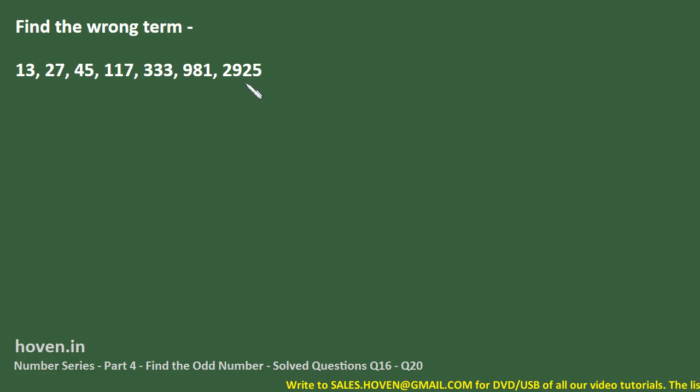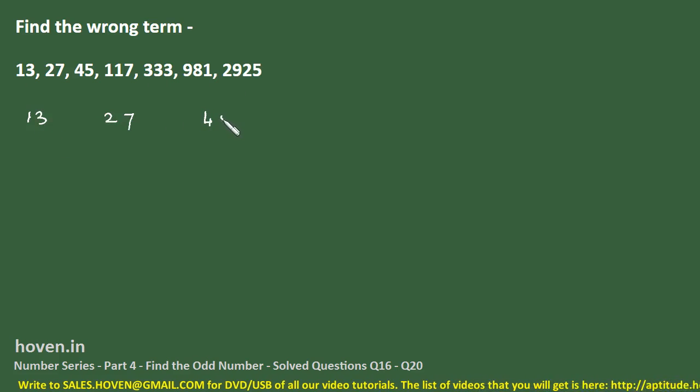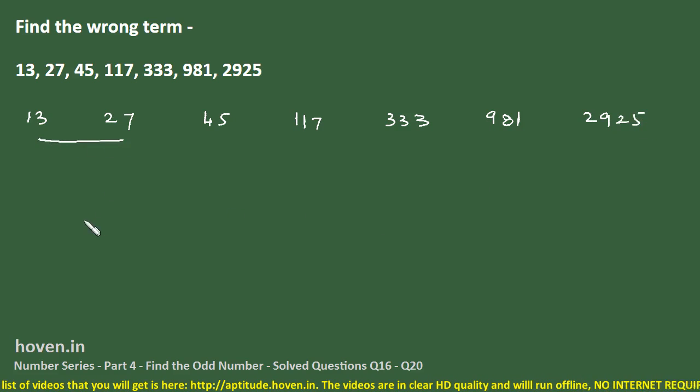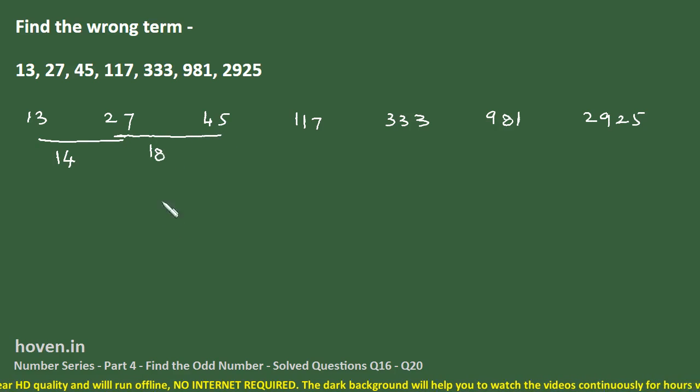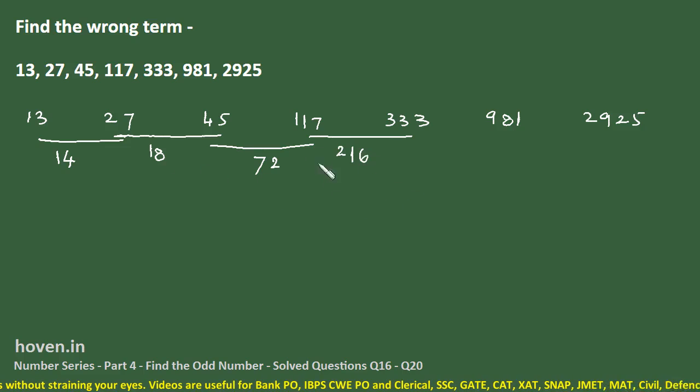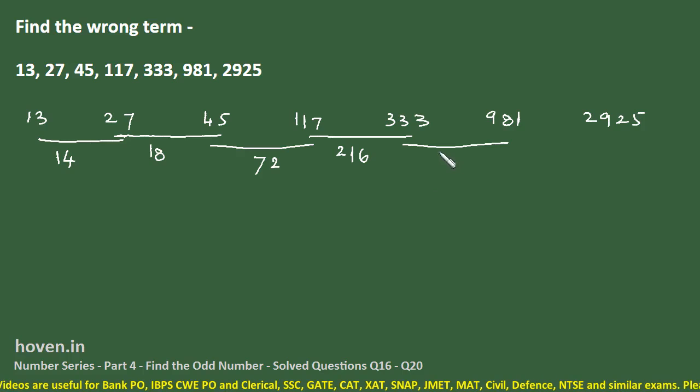Find the wrong term: 13, 27, 45, 117, 333, 981, 2925 - a big number at the end. Any one of these could be wrong. But let us do one thing, let us write them on a straight line and try to calculate their differences. We might be able to find out the rule behind it. This difference is 14. Seems like an odd number. And difference from 27 to 45 is 18. The difference is 72, so this can also pair out. What about this one? This is 216. All these are multiples of 8 as I can see.